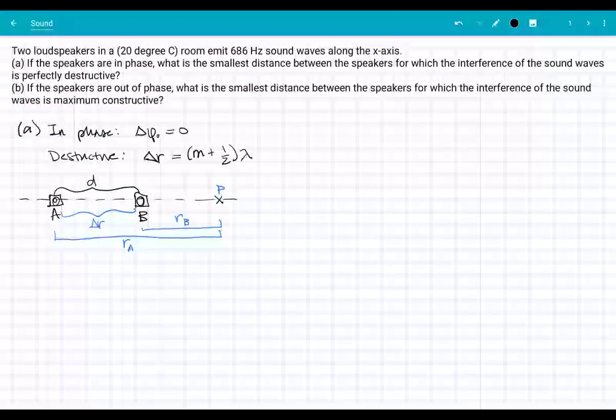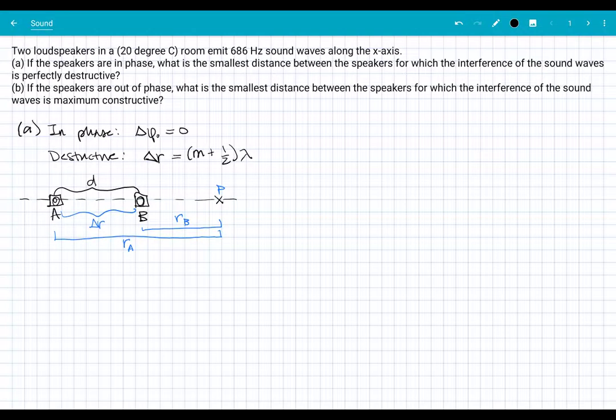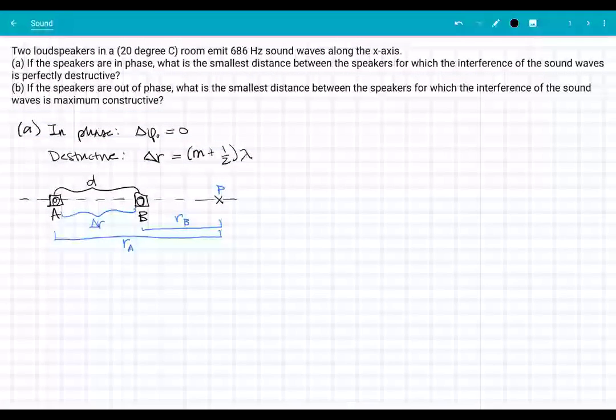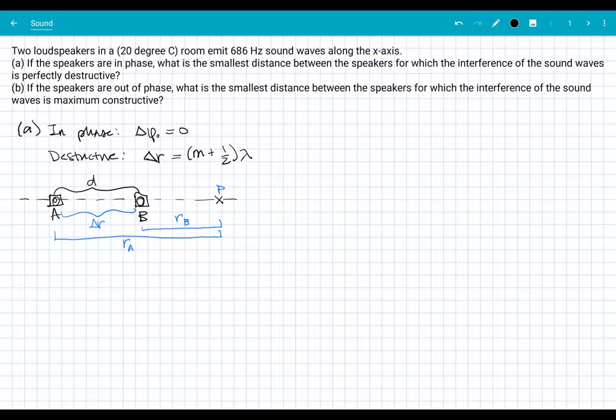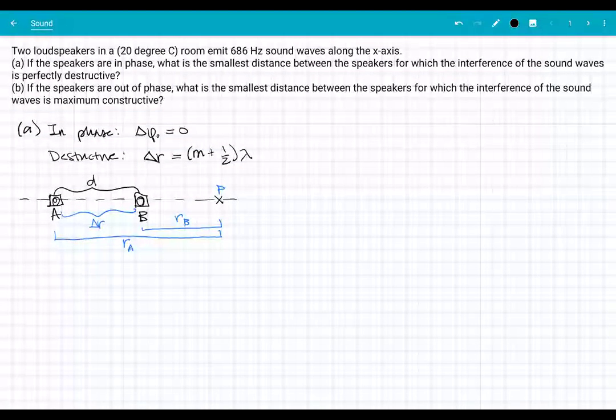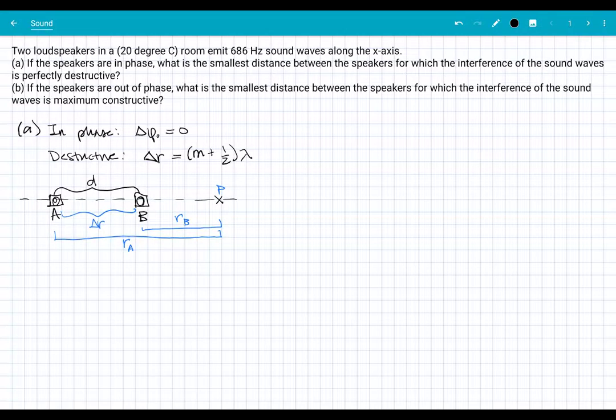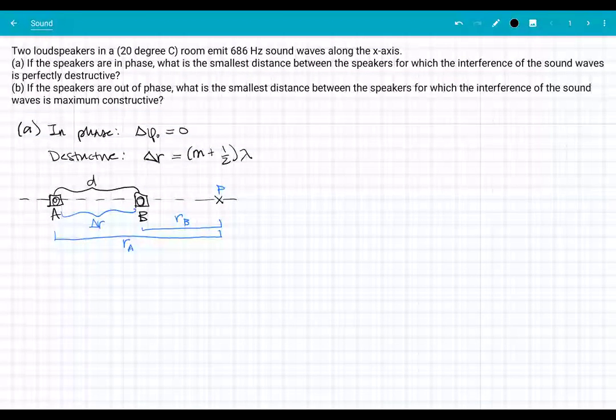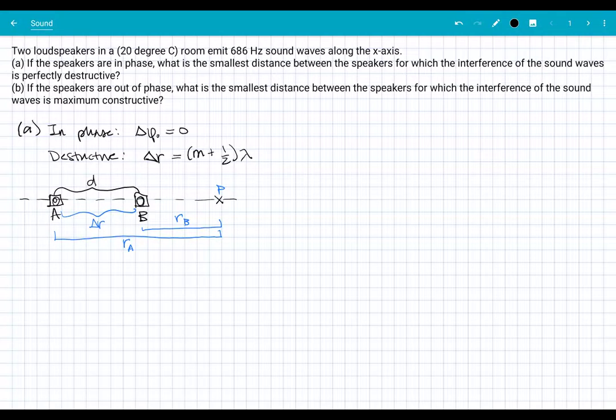They should make sense visually that if you're off by some odd multiple of half a wavelength, that means when one wave is at its crest, the other is at its trough. Those are going to sum to zero. What we know here is that our delta R is equal to D for how this problem is laid out.